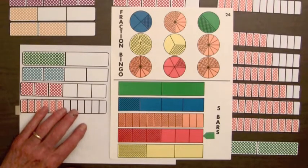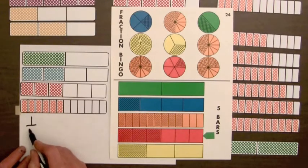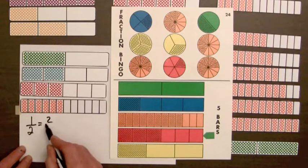All of these bars are half shaded, so their fractions are equal. We can write a chain of equalities here.